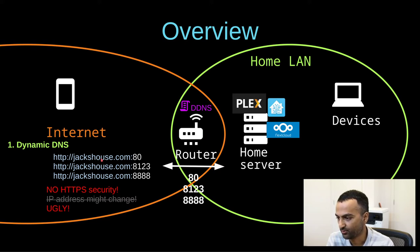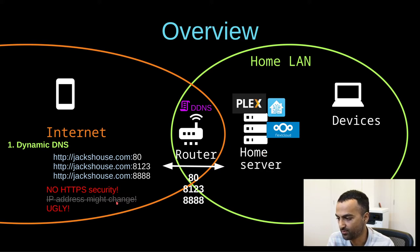When you have this setup, you'll be able to access your services through a URL rather than the IP address. However, this domain name still requires you to enter each port for whichever service you want to access. So it solves the problem of the IP address changing, but you still don't have HTTPS encryption — anyone can still eavesdrop on your data — and it's also still a bit ugly because you have to type in the port at the end of each URL.